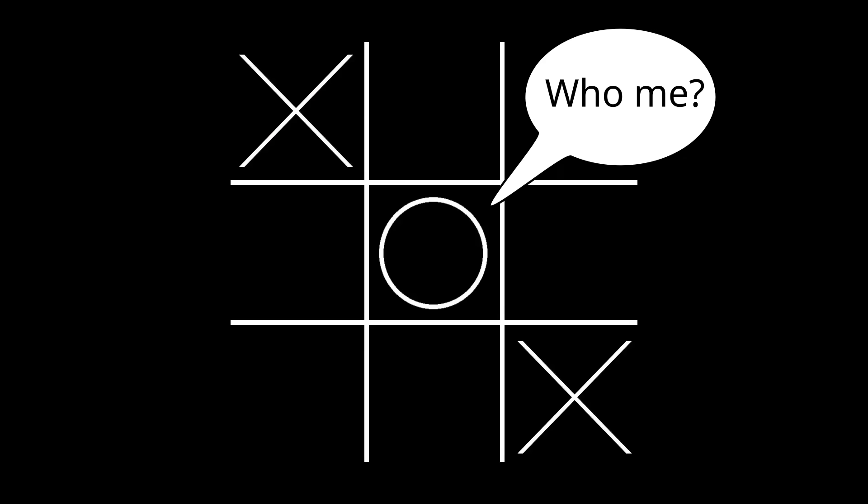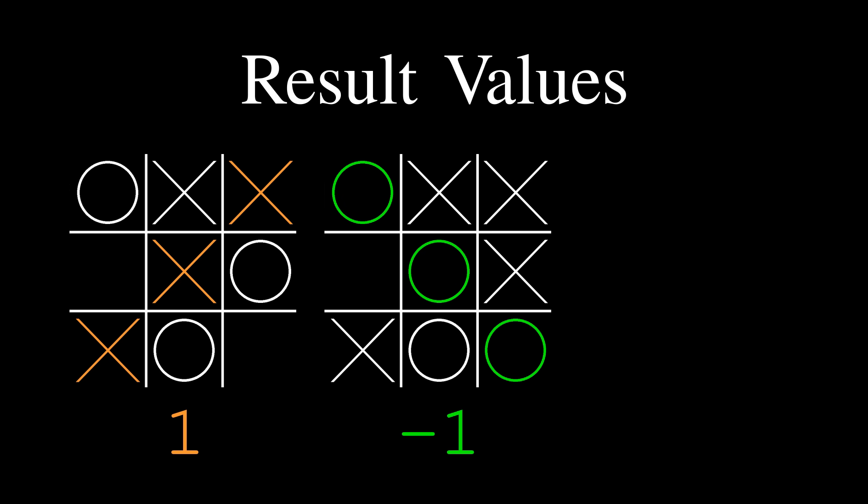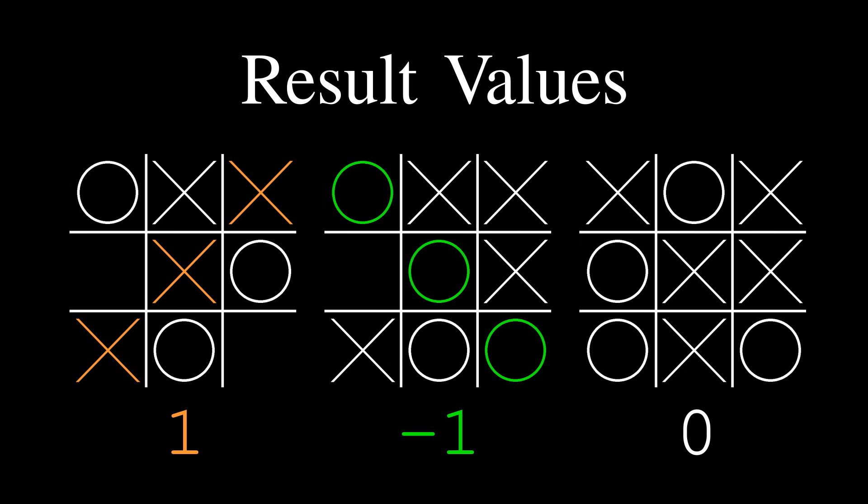So how do we evaluate the state of this position for the two players? Well, it depends on the quality of O as a player. Again, let's let 1 represent X winning the game, negative 1 represent O winning, and 0 represent a tie.